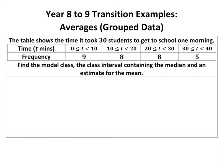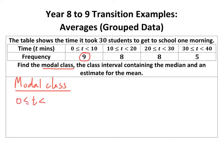We're looking at averages in grouped data. The first question is modal class. Mode is the most common value, so we're looking for the group with the most data in it. The modal class is where we find the highest frequency. Don't be tempted to pick the frequency that appears most often — nine is actually the highest, so the modal class is naught to ten.